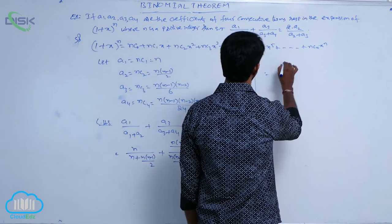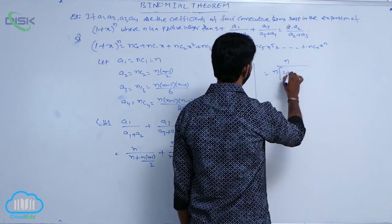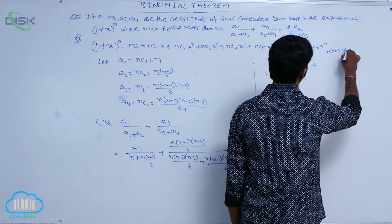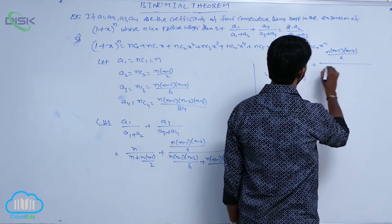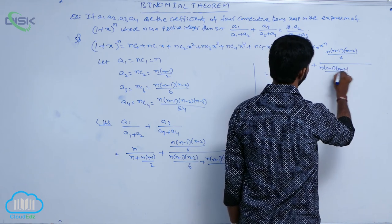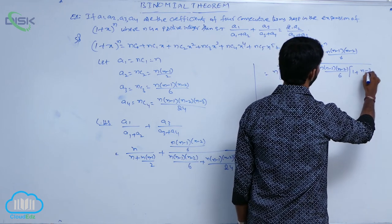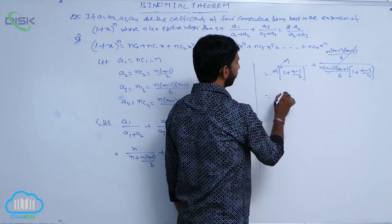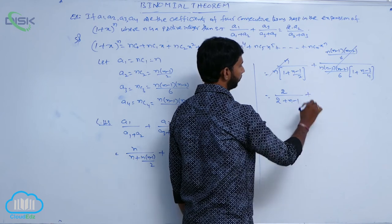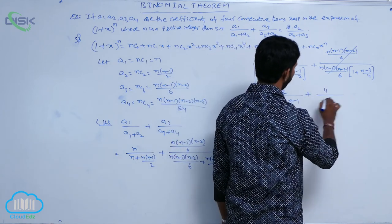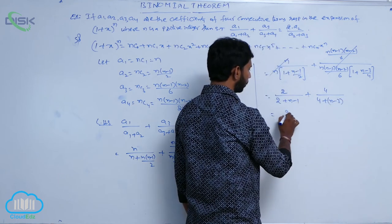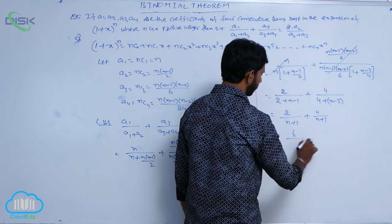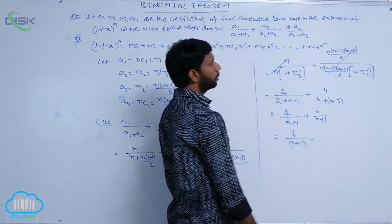Simplifying: in the first term, n is common in the denominator giving n / [n·(1 + (n−1)/2)] = 2/(n+1). In the second term, n(n−1)(n−2)/6 is common in the denominator giving 4/(n+1). After taking LCM: 2/(n+1) + 4/(n+1) = 6/(n+1).